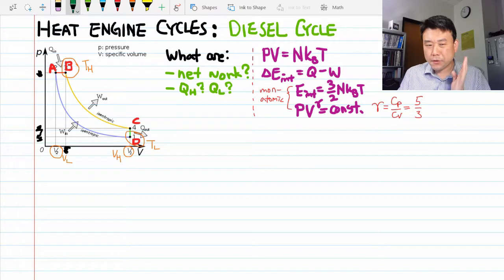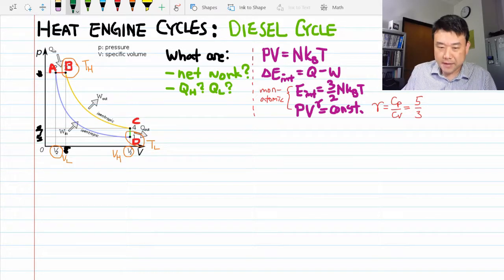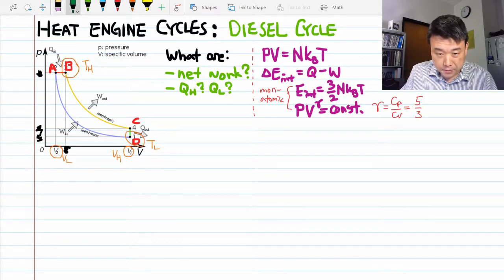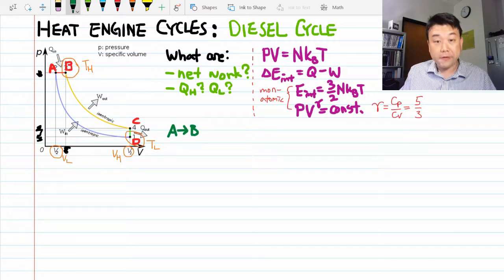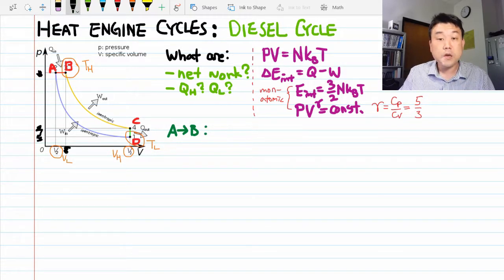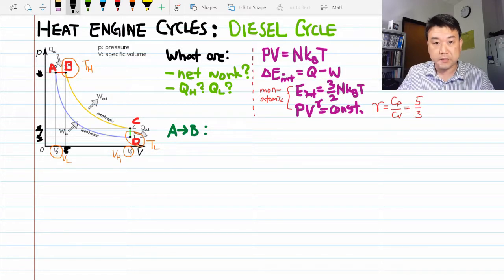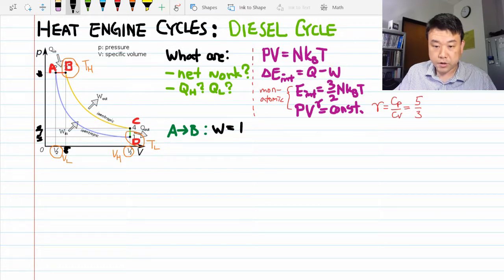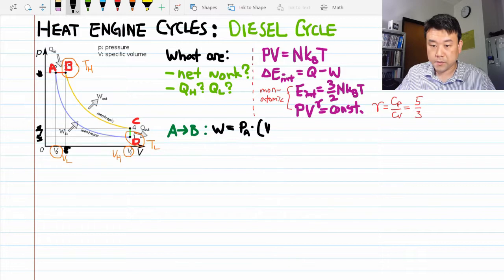Like with the Otto cycle, I want to get through this quickly. I'm really only doing this for comparison. Okay, so for A to B, the isobaric expansion. We haven't had this in a while, but hopefully you remember how this goes. With the isobaric expansion, the work done can be expressed simply algebraically. So the work done is pressure at point A times the change in volume. Volume at B minus volume at A, which is V sub L, the low volume.